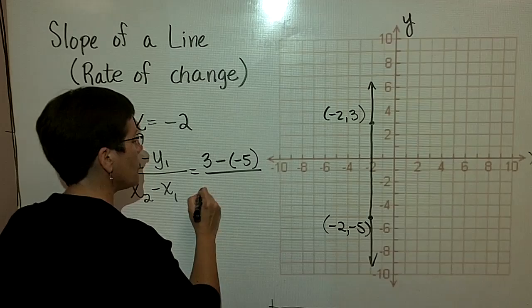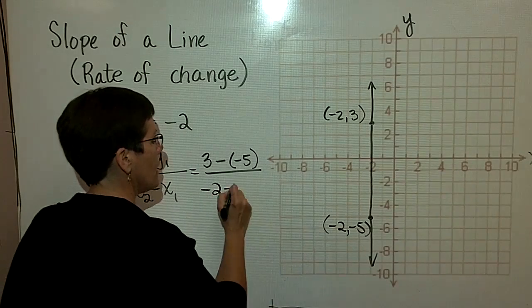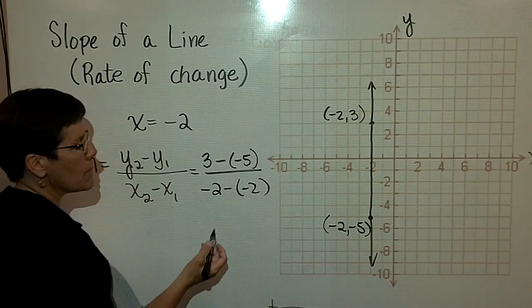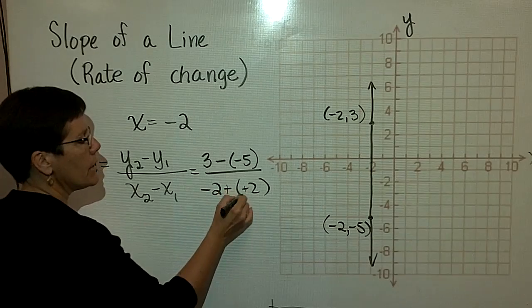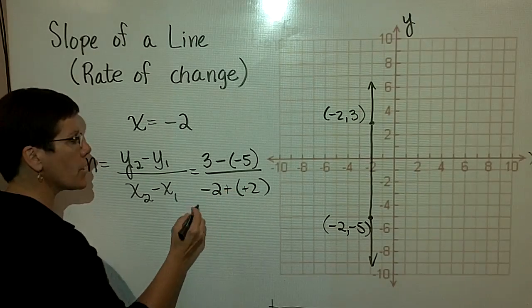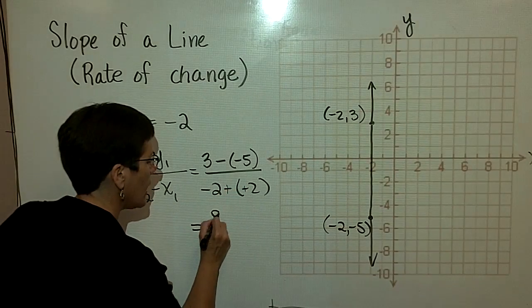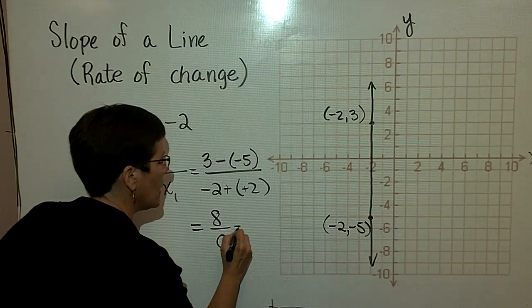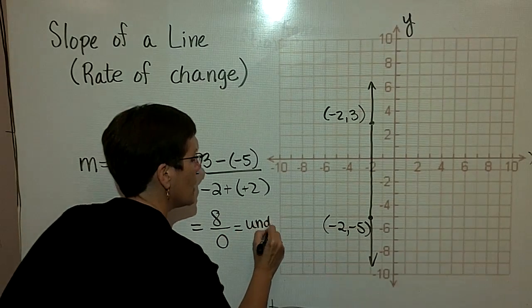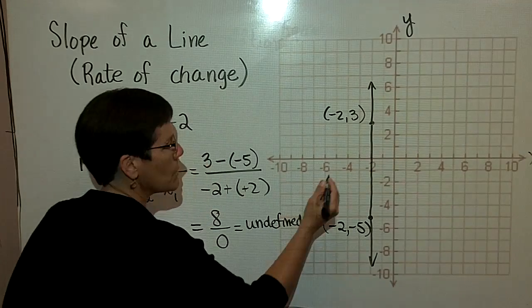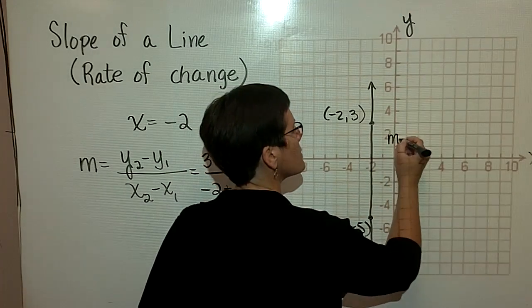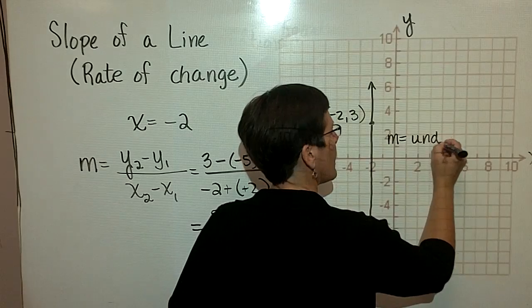Then I have to take this negative 2 and subtract that negative 2. Remember, when you subtract, you add the opposite. In the denominator, you're going to have a 0 this time. You have an 8 and then a 0. You have to tell me that the slope of this line is undefined.